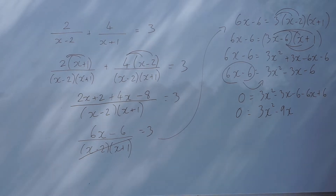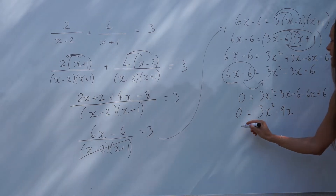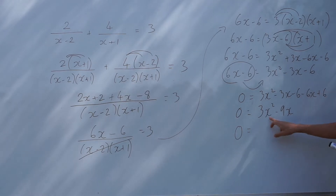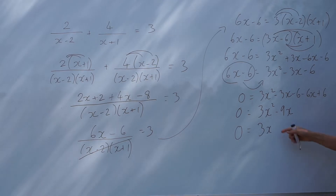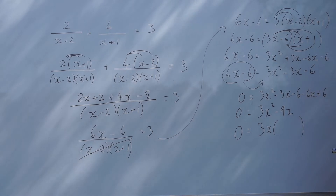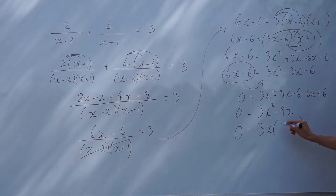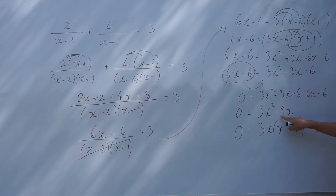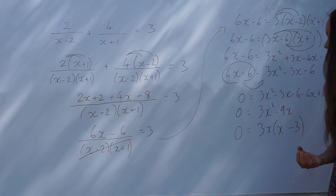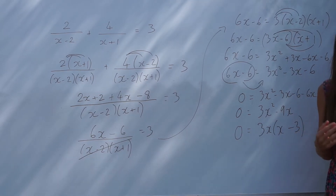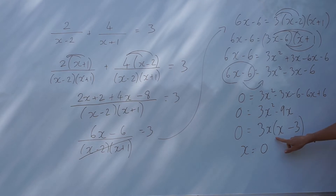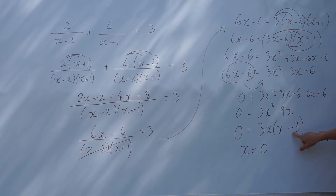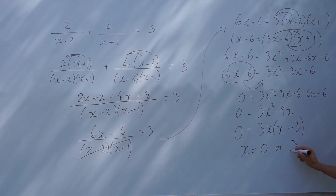One last bit of simplifying: 3x squared stays the same; negative 3x take away another 6x gives negative 9x; and negative 6 plus 6 is 0, so they cancel. So now we have to solve this quadratic. We can factorise the right-hand side — the highest common factor of 3 and 9 is 3, and x is also common to both terms. So factorising: 3x multiplied by x is 3x squared, and 3x multiplied by negative 3 gives negative 9x. Since this expression equals 0, x can be 0 or the bracket equals 0, giving x equals 3.